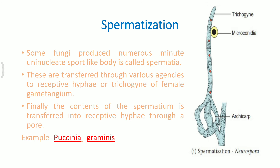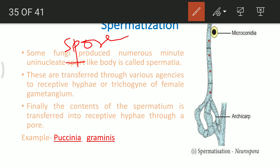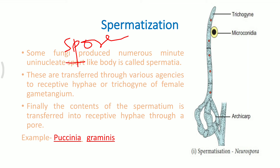Spermatization is another technique of sexual reproduction in which uninucleate spore-like bodies called spermatia are formed. In this structure, a trichogyne or receptive hypha is present. The trichogyne is a female structure that is receptive to the male spermatia, and the spermatium is transferred into the receptive hypha through microconidia. As a result, we get the developed plant body, which is seen in either Paxenia or Neurospora.